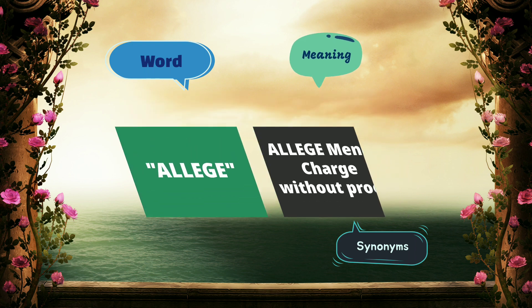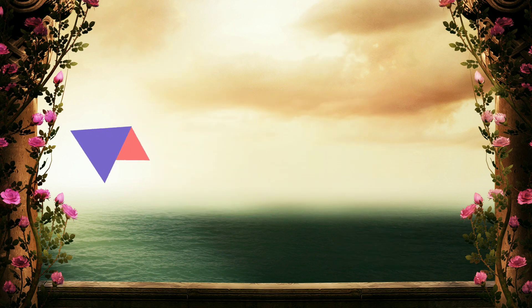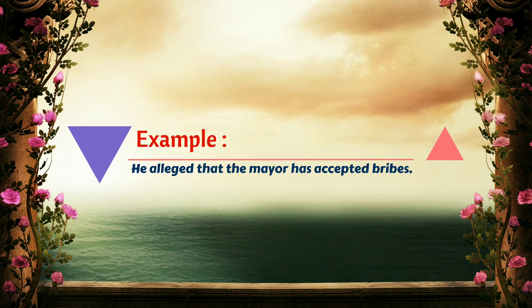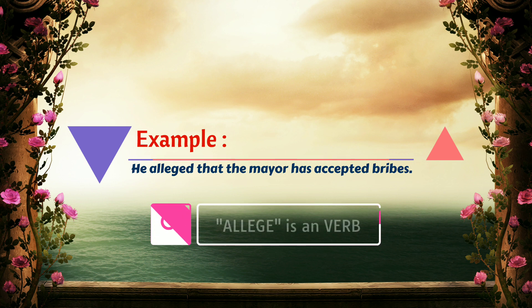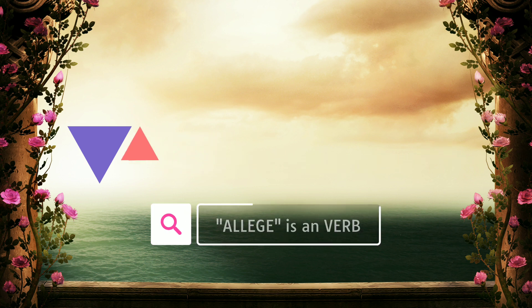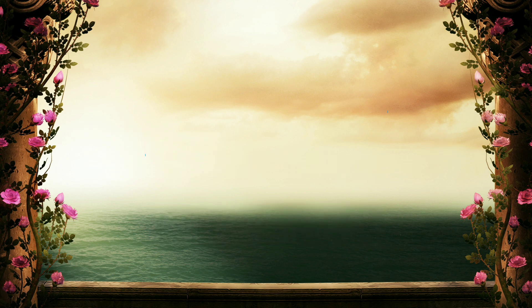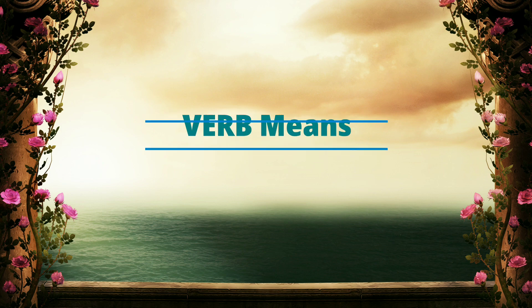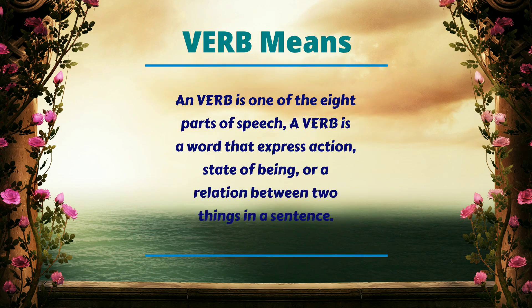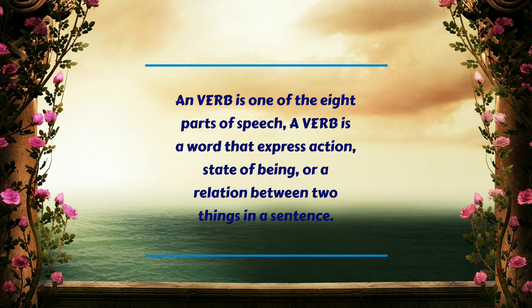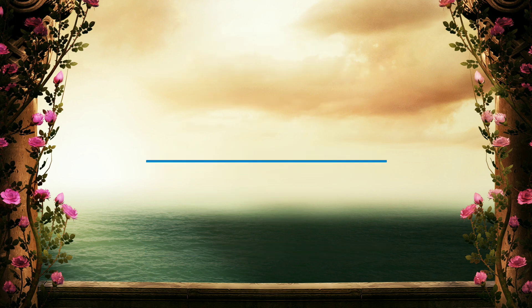Example: He alleged that the mayor has accepted bribes. Here allege is a verb. A verb is one of the eight parts of speech — a word that expresses action, state of being, or a relation between two things in a sentence.